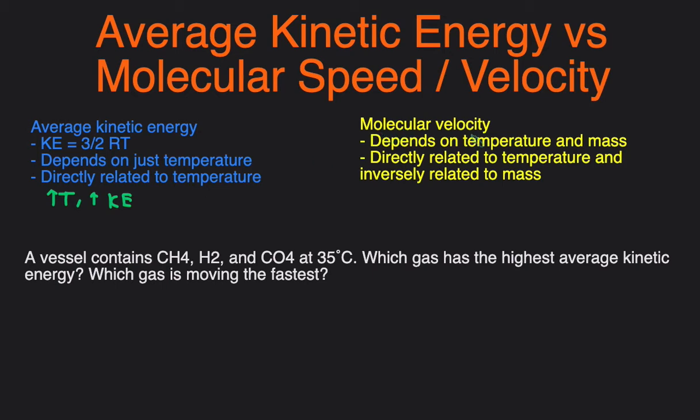On the other hand, molecular velocity or speed, its equation is usually the root mean square velocity equals square root of three R temp T divided by the molar mass. So this depends on both the temperature and the mass. It's directly related to temperature and inversely related to mass. So the hotter the object, the faster it'll move, and the lighter the object, the faster it'll move.